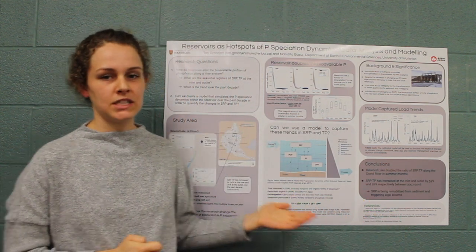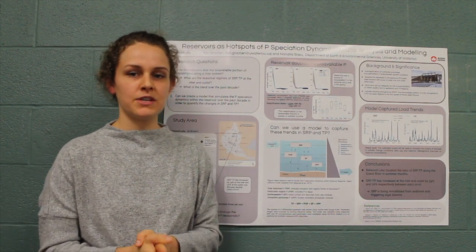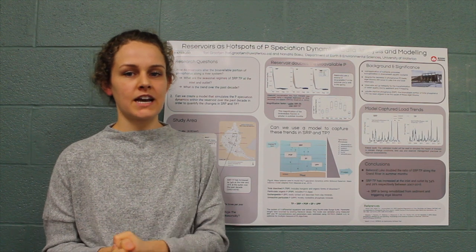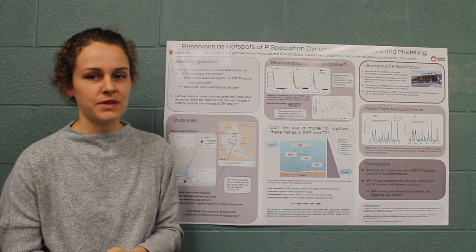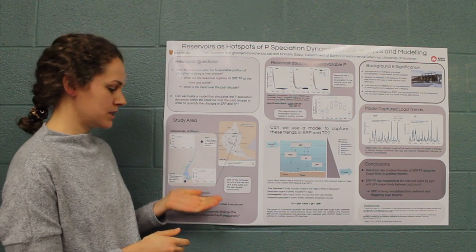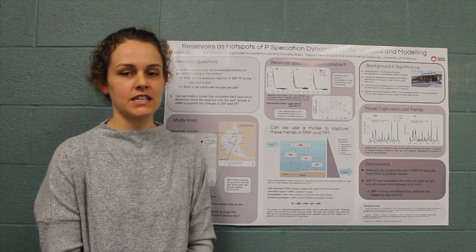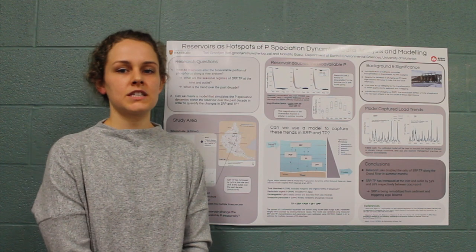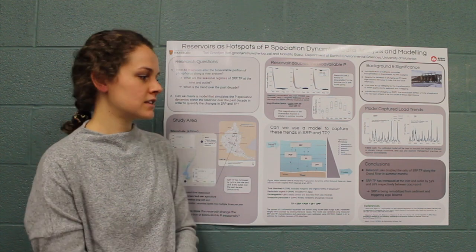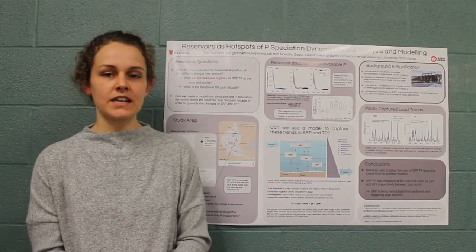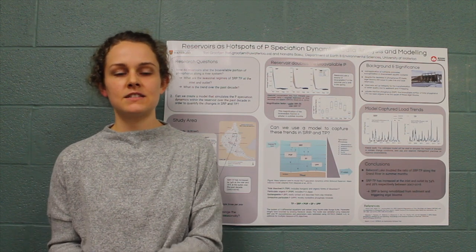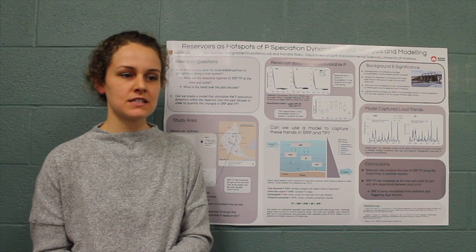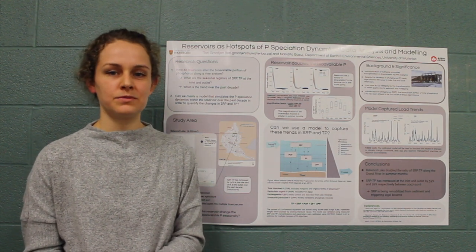In summary, we found that Bellwood Lake doubled the SRP to TP ratio from inlet to outlet in the summer months, and that the SRP to TP ratio has increased by approximately 30 percent over the last 10 years. What these two findings suggest is that SRP is being remobilized from previously deposited phosphorus in the sediments and is triggering algal blooms.